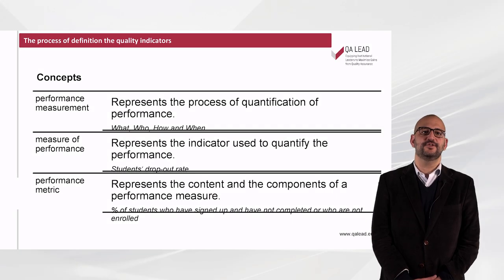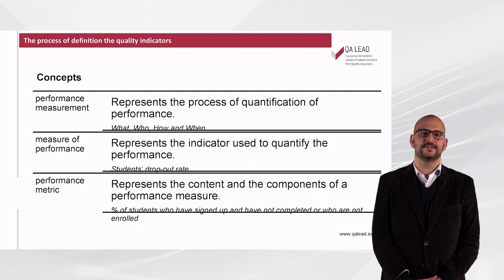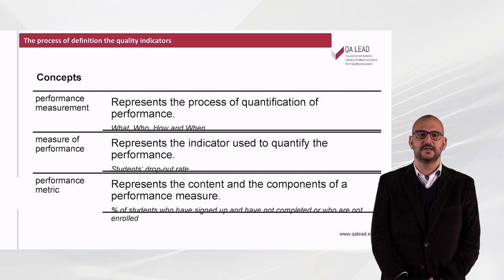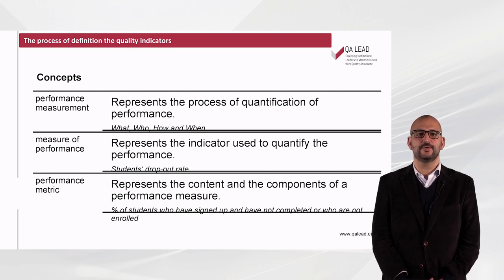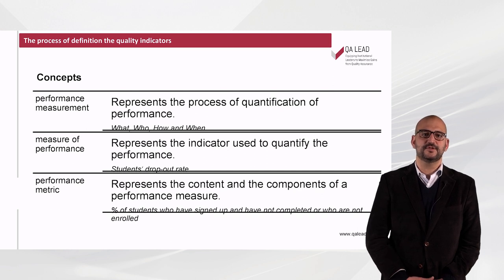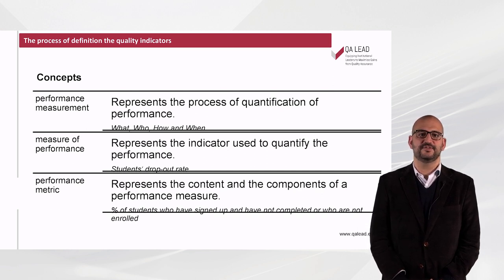To understand the definition process of quality indicators, we need to know some concepts first, like performance indicators. Talking about performance indicators is foremost talking about three fundamental concepts. Firstly, the performance measurement, which represents the process of quantification of performance.